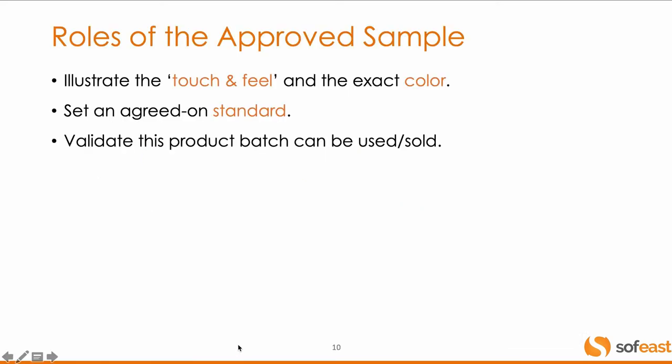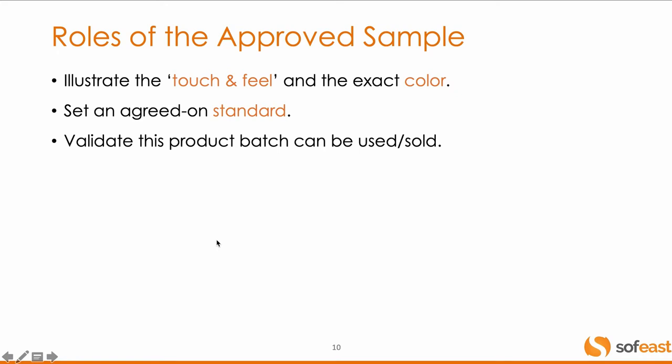Let's start with an approved sample. An approved sample is good — you get a sample and say, this is what I want you to produce. But it's useful mainly for illustrating the touch and feel of the product, because that's pretty much impossible to describe clearly in words, and the color. You can use Pantone codes, but really with a lot of materials it's better to have an exact sample in that exact material. So it becomes a standard — you validate it, maybe show it to some of your customers. But it's not enough. You also need a product checklist.